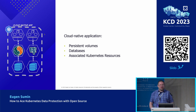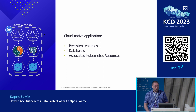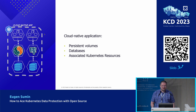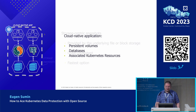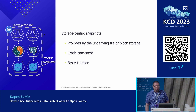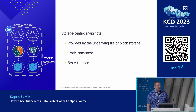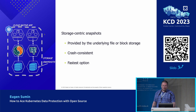Before we speak about these great projects, let's discuss how data management on Kubernetes is generally done. Cloud native applications comprise several components including persistent volumes, databases, and other associated Kubernetes resources. The simplest way to make a backup is to use storage-centric snapshots provided by the underlying storage provider. These are pretty fast, crash-consistent, and in most cases the quickest possible solution for backup.